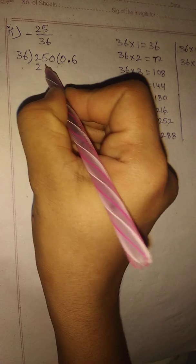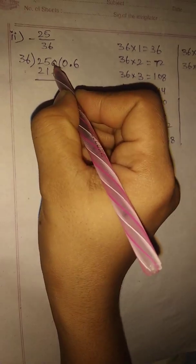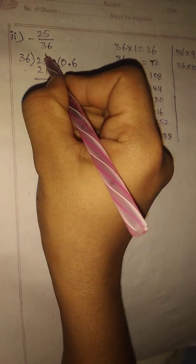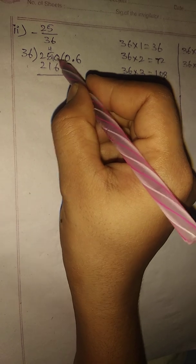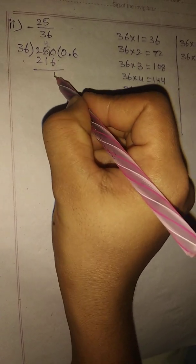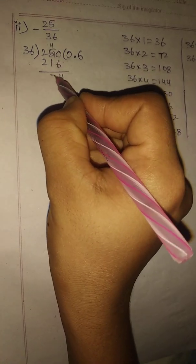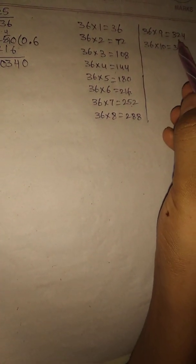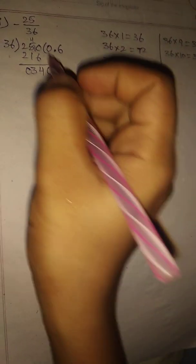36 times 6 is 216. Subtract: 250 minus 216 — take borrow where needed — 10 minus 6 is 4, 4 minus 1 is 3, 2 minus 2 is 0, remainder is 34. Take 0, so 340 below. Check 36 table: 36 nines are 324.